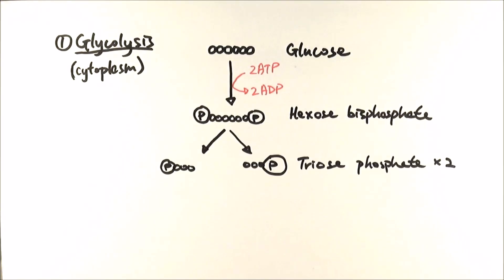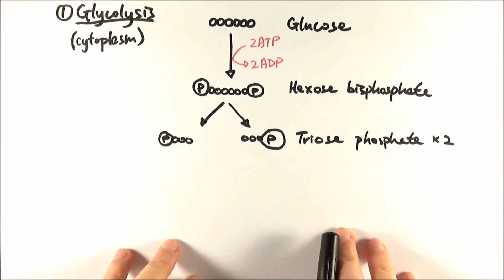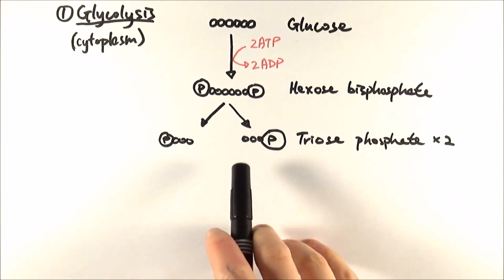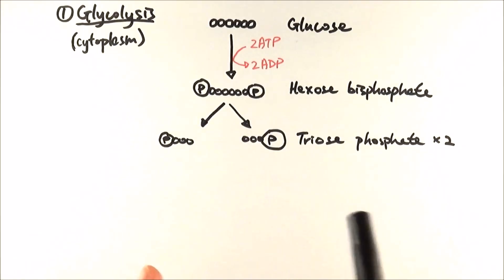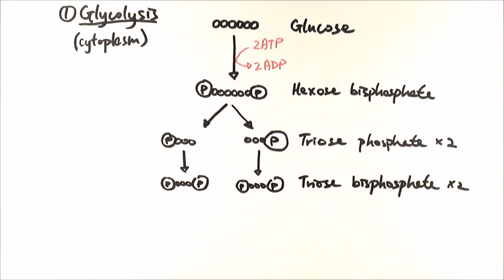Then what happens is a phosphate group from the cytoplasm is added onto the triose phosphate, and because you're adding a phosphate group, it becomes triose bisphosphate.